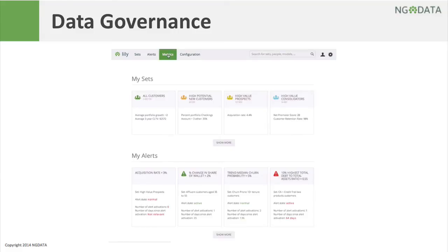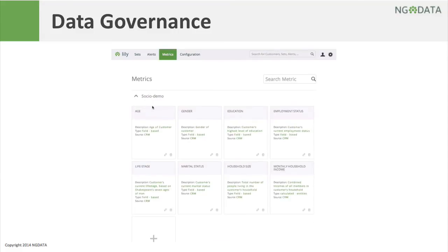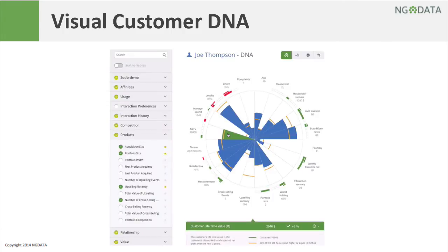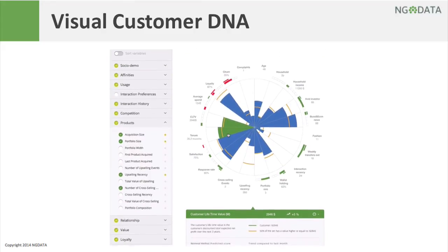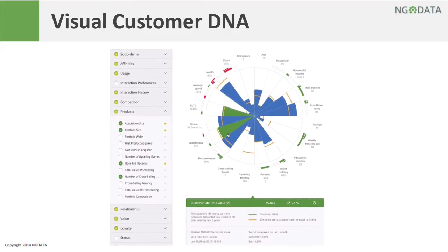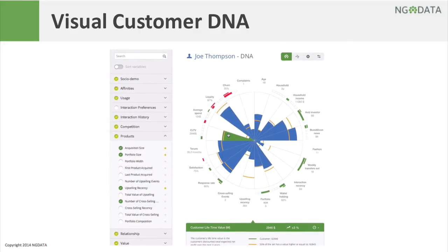Lilly enables all departments across your organization to speak the same language with centrally defined metrics supporting solid data governance practices. Lilly customer DNA can be accessed through a user-friendly visual interface. You get an immediate view of every customer based on your selection of metrics for quick comparison with sets defined by you or for deep-dive exploration.